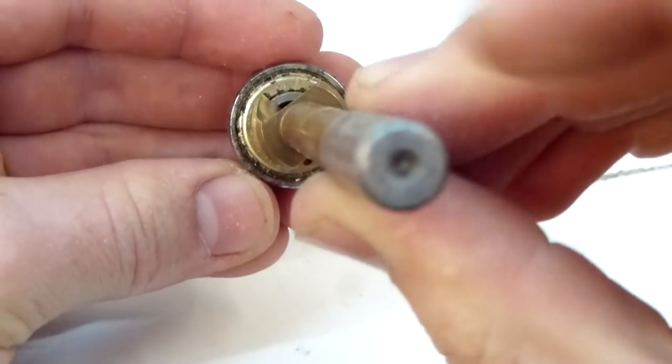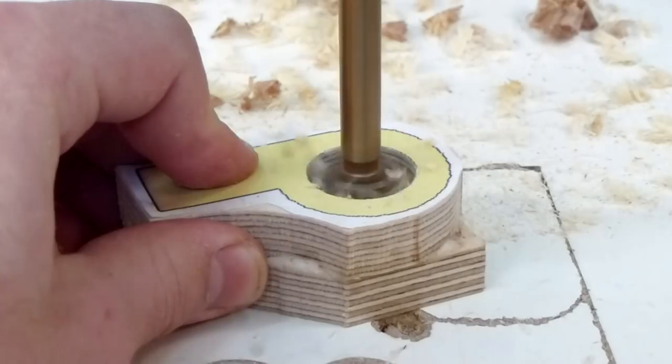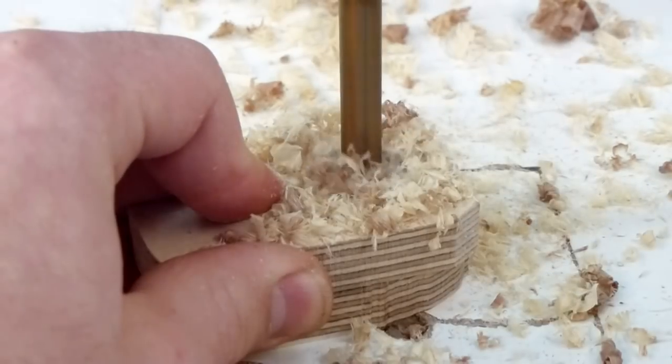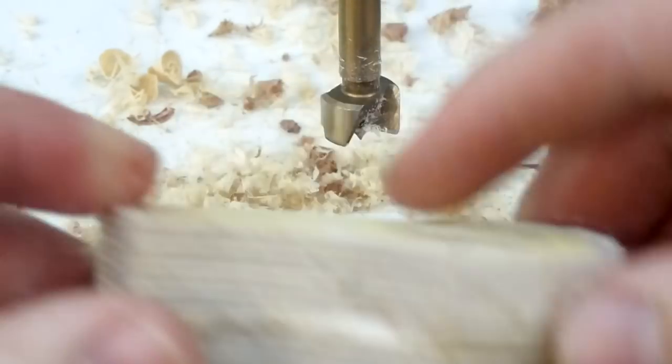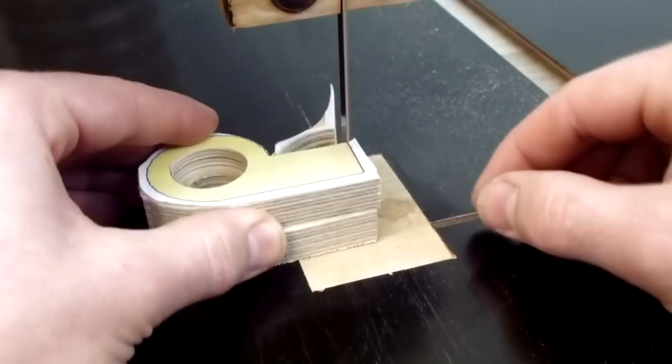Then with a bit smaller than the bearing drill all the way through. Make sure to drill from both sides to prevent chip out. Then cut out the shape and sand to the line.